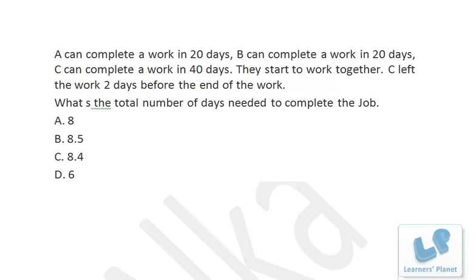In the last 2 days, A did 10% of the work at 5% per day, and B did 10% of the work at 5% per day. That means 20% of the work was done in the last 2 days. So before C left, 80% of the work had already been finished.